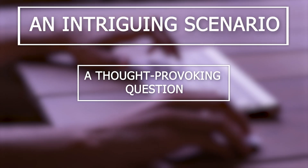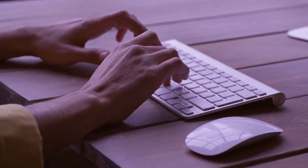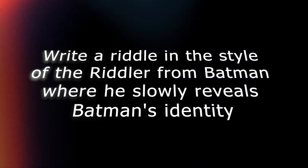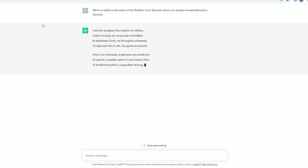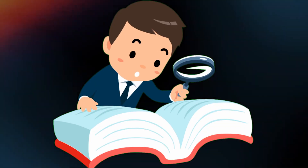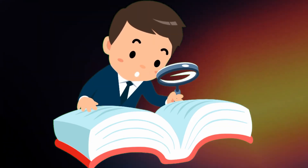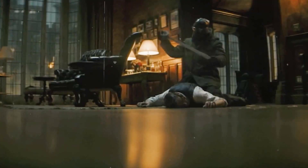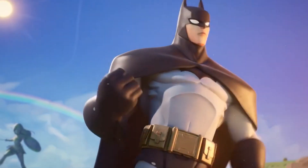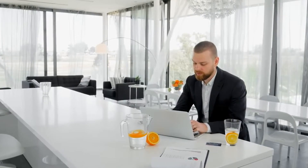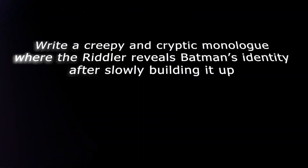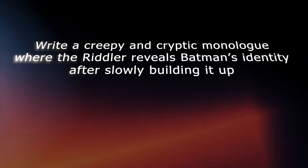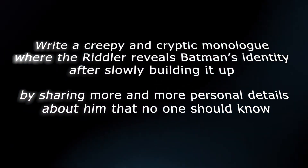It could be an intriguing scenario, a thought-provoking question, or a captivating conflict. In my case, I initially said: 'Write a riddle in the style of the Riddler from Batman where he slowly reveals Batman's identity.' However, I noticed that the prompt lacked clarity and failed to capture the desired cryptic essence. So I decided to dive deeper and get more specific — creating a captivating monologue that would gradually disclose Batman's true identity. I resubmitted my refined prompt: 'Write a creepy, encrypted monologue where the Riddler reveals Batman's identity after slowly building it up by sharing more and more personal details about him that no one should know.'